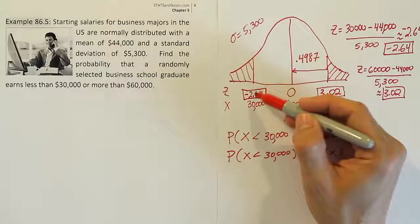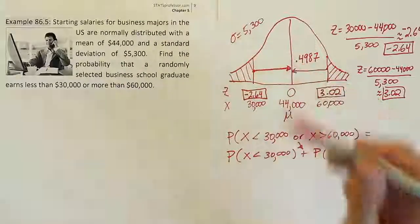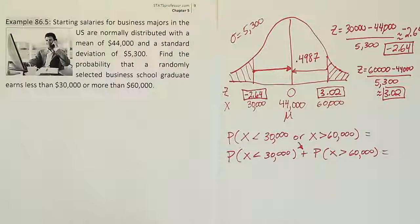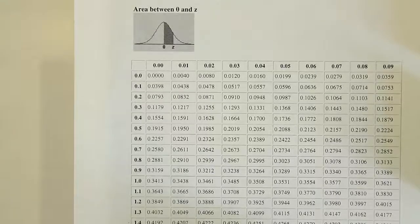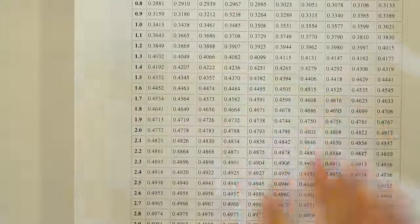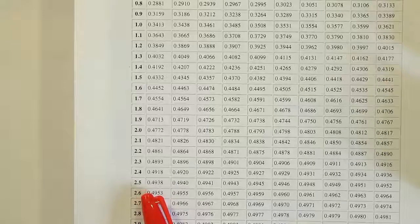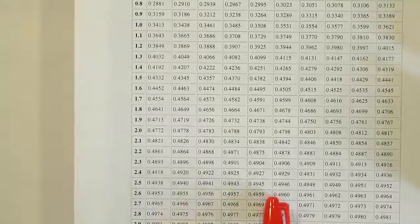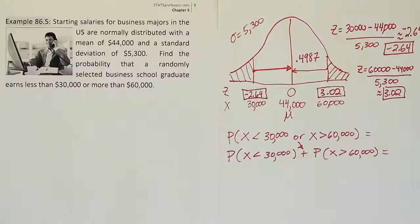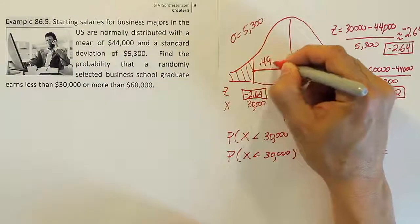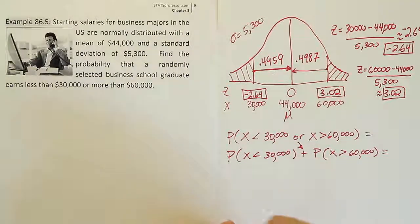We found the value 0.4987 for this little part of the curve. Now let's look up negative 2.64, which will give us the area from here to the center. Let's see what that answer is when we look it up on the Z-chart. We're looking to find negative 2.64 on our table. Here's the 2.6 row, and we need to go over to 2.64. We get the answer 0.4959. So we found the answer 0.4959, and that's the area from here to here after looking up negative 2.64 on our Z-chart.